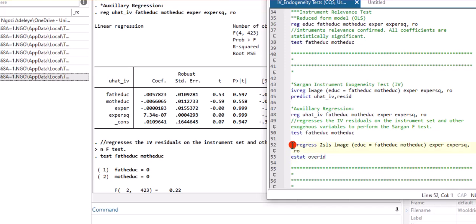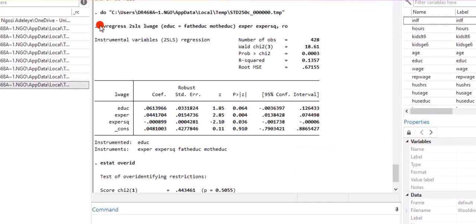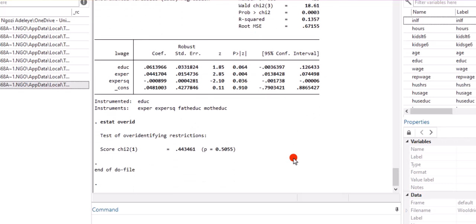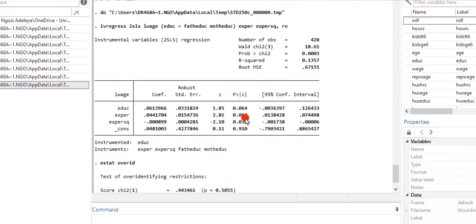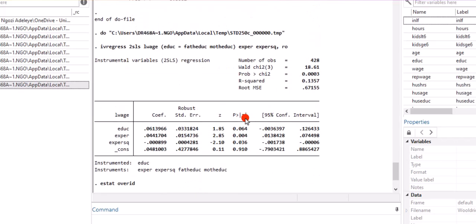This is the structural equation using two-state least squares. This is the result. By now, you are familiar with all this. And what we are mostly interested in is the result from the over-ID test, which is this. The p-value well above 0.05 and even at a 10% level. This one shows that the instruments are relevant. The instruments are exogenous. This is how you can use the Sargan test if you need to test for any of this. These are the diagnostics that often follow IV estimations.